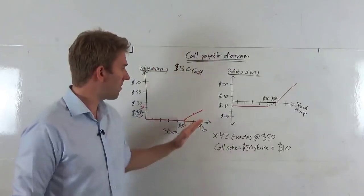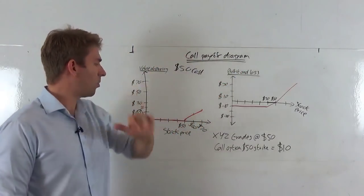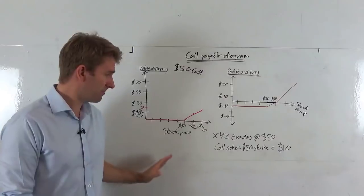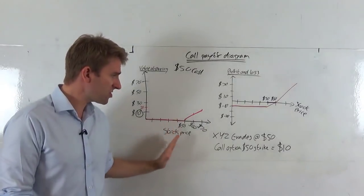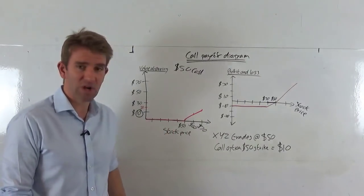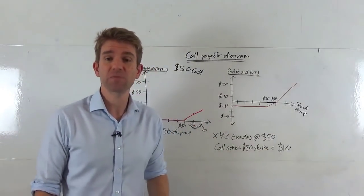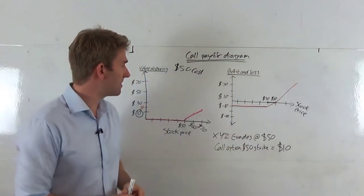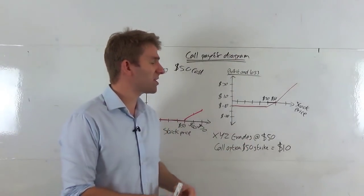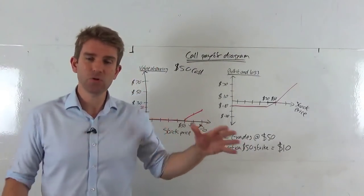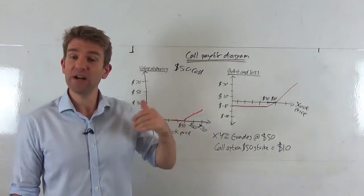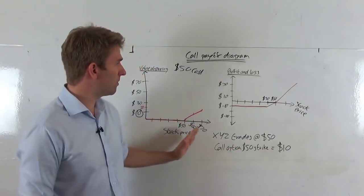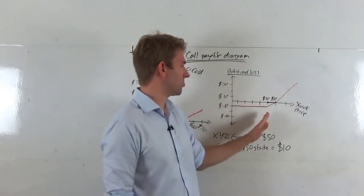And that's just going to go up and up — we could go to whatever we wanted. If the stock is trading at $150 at expiry with a $50 strike price, the value of the contract is going to be $100. That's all well and good, but for traders we want to know what our P&L is, so we're going to move over to the profit and loss chart.